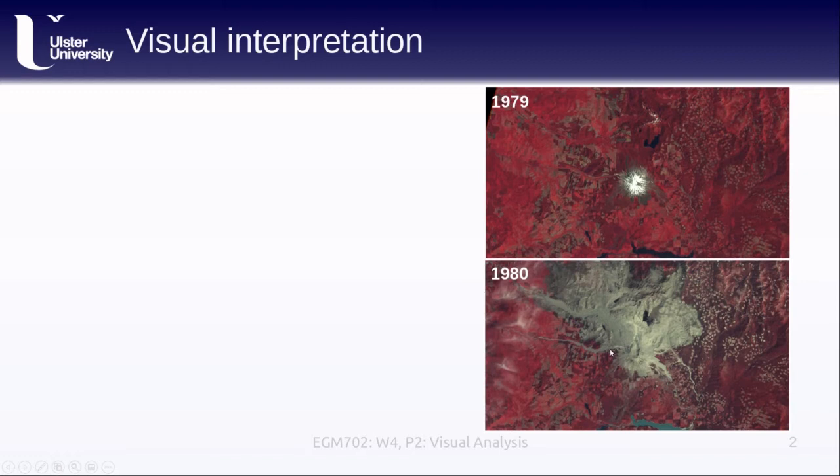We also see changes as a result of the various lahars that flowed down the different river valleys around the mountain, the changes to the mountain itself, to the lakes around, and you might even be able to pick out some changes as a result of ash cover, at least in the initial months after the eruption. But there are also a number of subtle changes, especially as we start to look over longer periods of time.